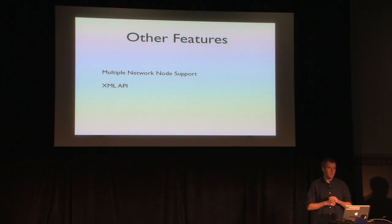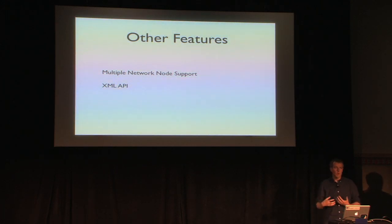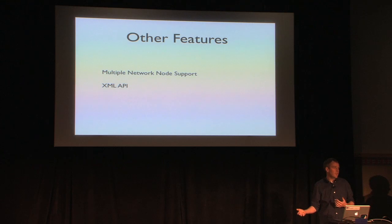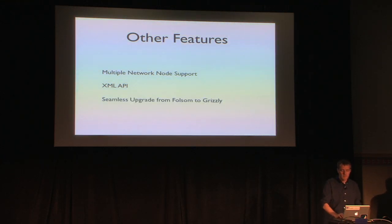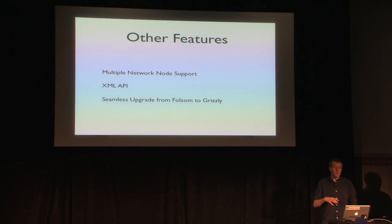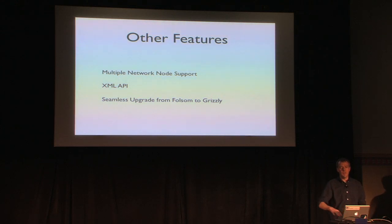We also added XML API support — previously the Quantum API was JSON only. We did a lot of work on making it XML, so now we have XML and JSON with full parity. We've also added pagination support, so if you're pulling down large data sets, you don't have to get everything at once — you can page through it. We've also worked on adding a seamless upgrade path in the database from Folsom to Grizzly. Previously with Essex to Folsom, because of the number of changes, there wasn't an upgrade path without doing some manual work.